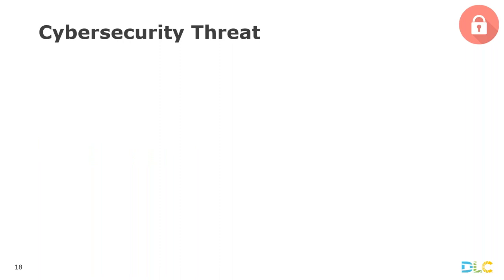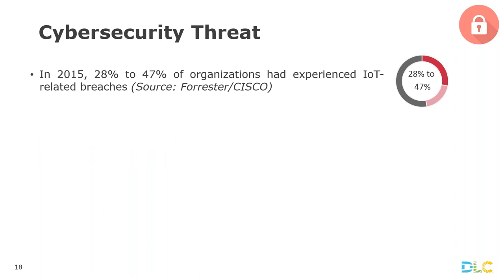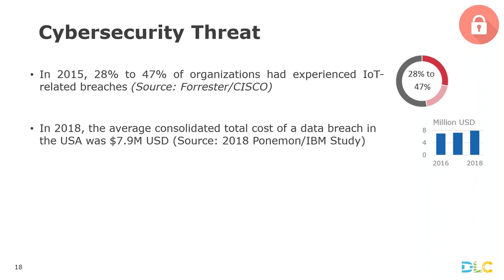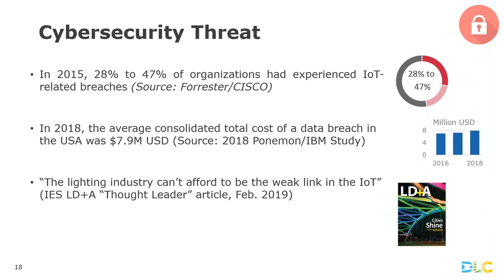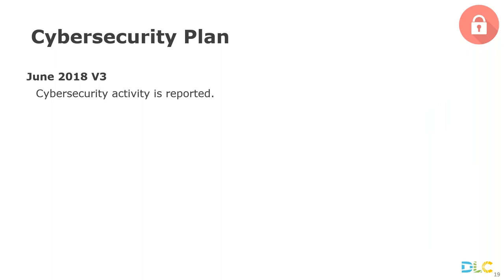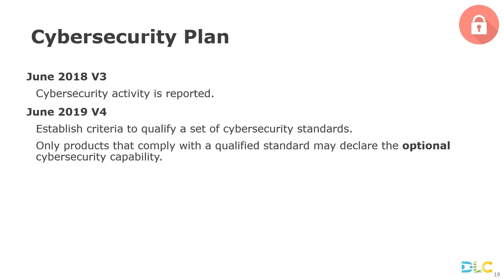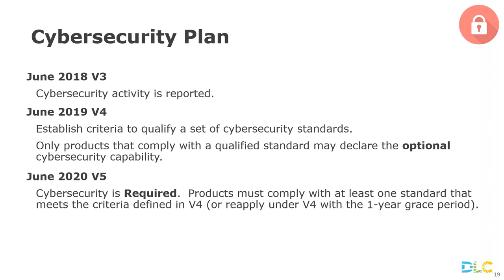Here's some background on the importance of cybersecurity as lighting systems get networked. Nearly half of organizations Cisco surveyed back in 2015 had already experienced a security breach related to the Internet of Things. In 2018 in the USA, the average cost of a data breach was nearly eight million dollars. As Gary Meshberg wrote in a recent IES LD+A, the lighting industry can't afford to be the weak link in the Internet of Things. The plan laid out last year: this year we'll set criteria for what counts as an official cybersecurity standard; next year in 2020 systems will need to be certified with one or more standards meeting these criteria; and by June 2021 all products on the QPL will be certified in cybersecurity.